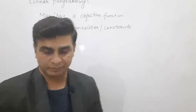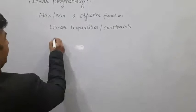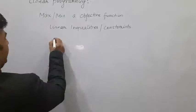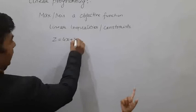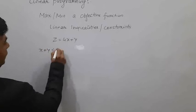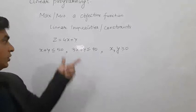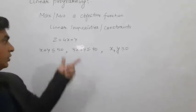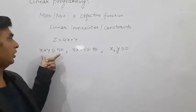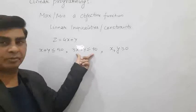Let us start with an example. The first question of your exercise: we need to maximize z = 4x + y, subject to the constraints x + y ≤ 50, 3x + y ≤ 90, and x, y ≥ 0. We need to maximize this objective function through these linear inequalities known as constraints.